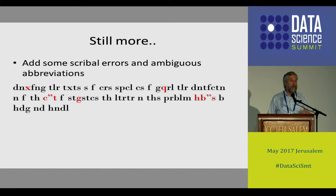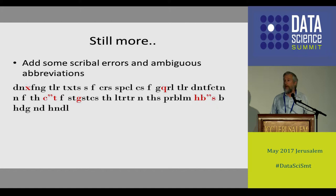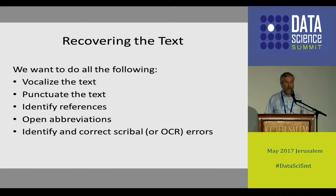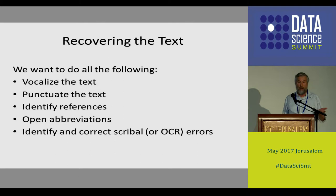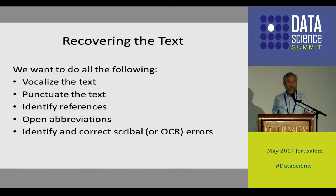So what we want to do is reconstruct or construct for the first time some plausible-looking text. You want to vocalize the text, punctuate it, identify all the references, open the abbreviations, and identify and correct scribal errors. The errors might not only be scribal — they might also be OCR errors, because the way we get digital versions of texts is by OCR-ing old texts. The OCR itself introduces new errors on top of the many that were already there.